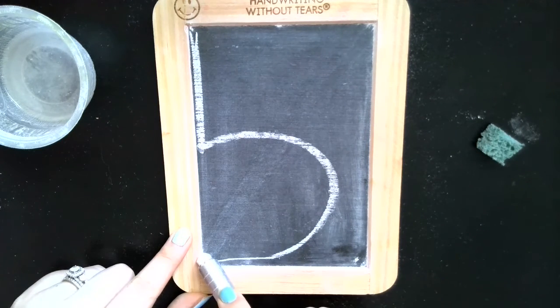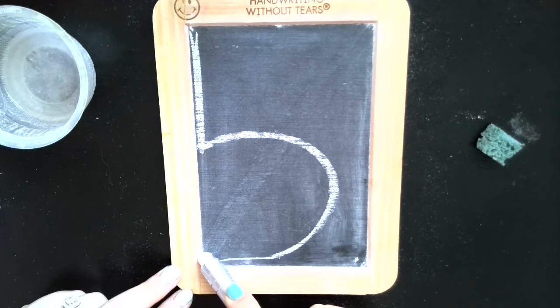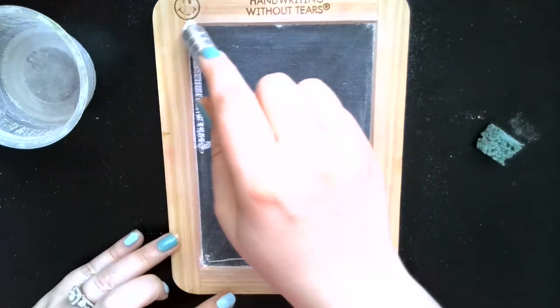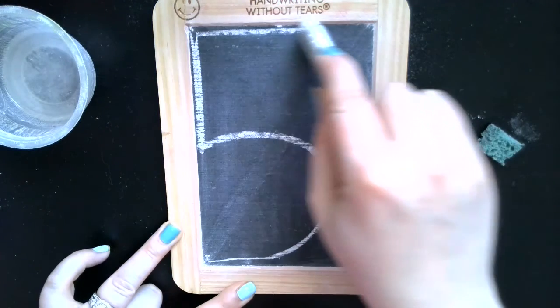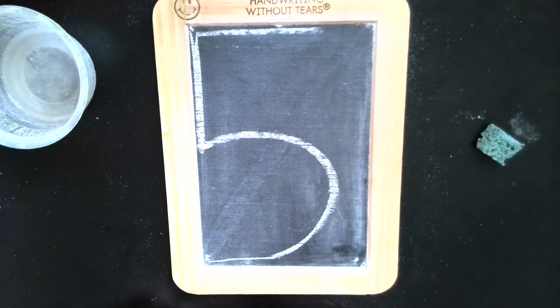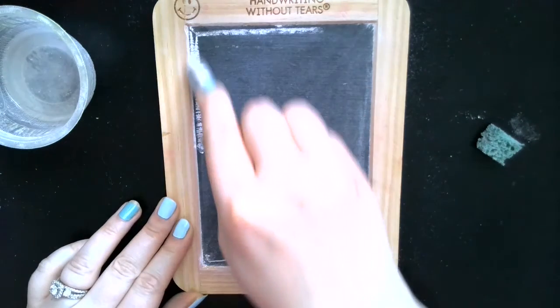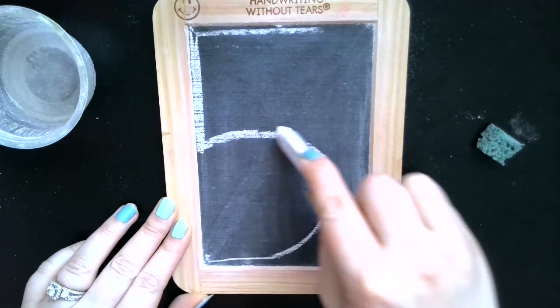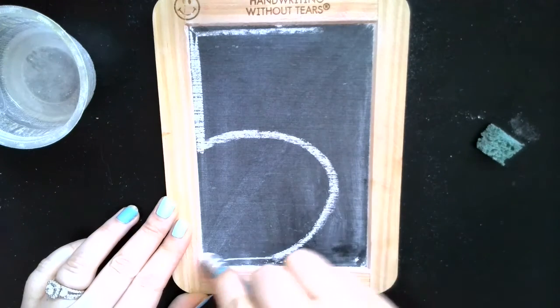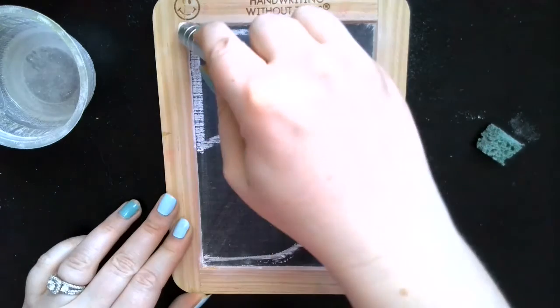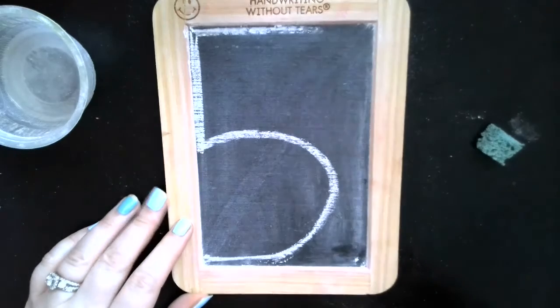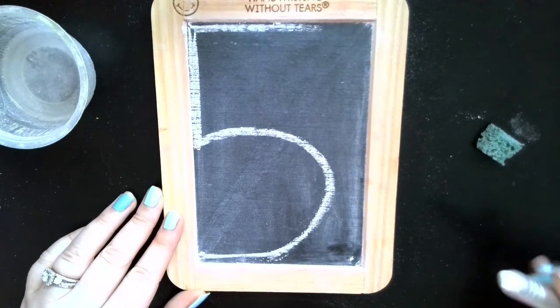Then we're going to stop once we get to the bottom. But our five is missing something. He's missing his hat. So we're going to jump back to the top and do a little hat across the top. So remember we do a small line down, a little curve around, and back home to grab his hat across the top. There you go.